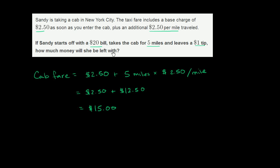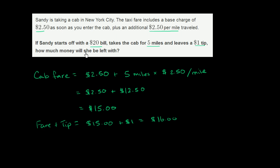Sandy gives a $1 tip, so fare plus tip is going to be equal to the cab fare — $15 — plus $1, which is equal to $16. So answering the question, how much money would she be left with from a $20 bill? Her change is going to be $20 minus $16, so she's going to have $4 left in change.